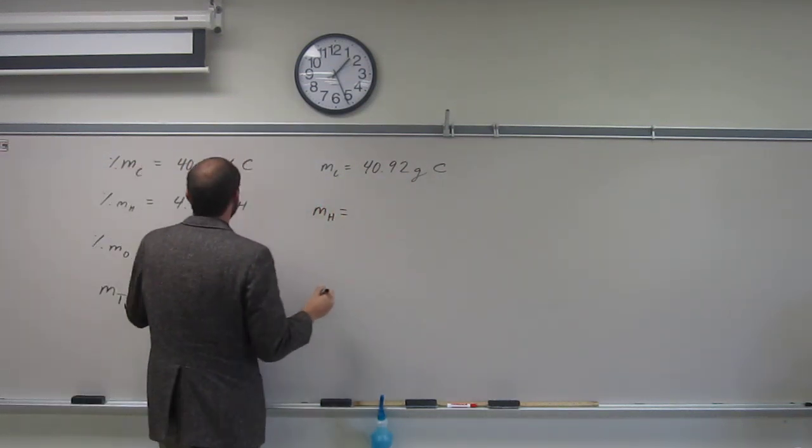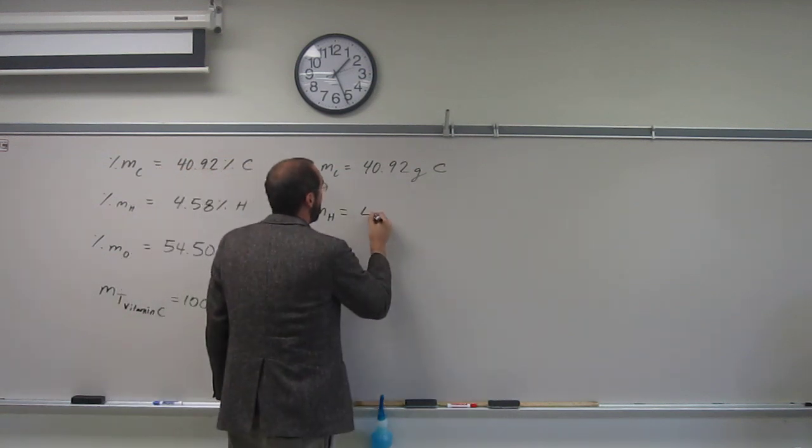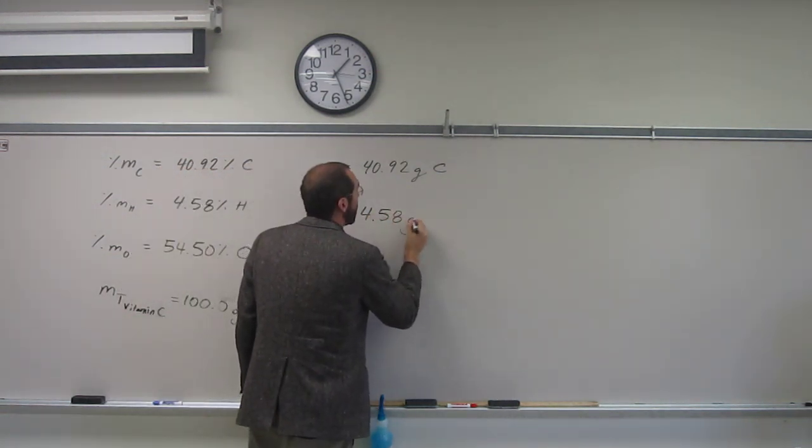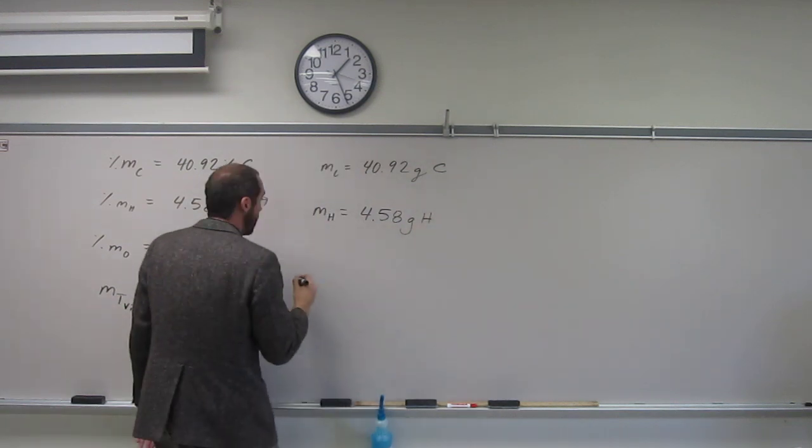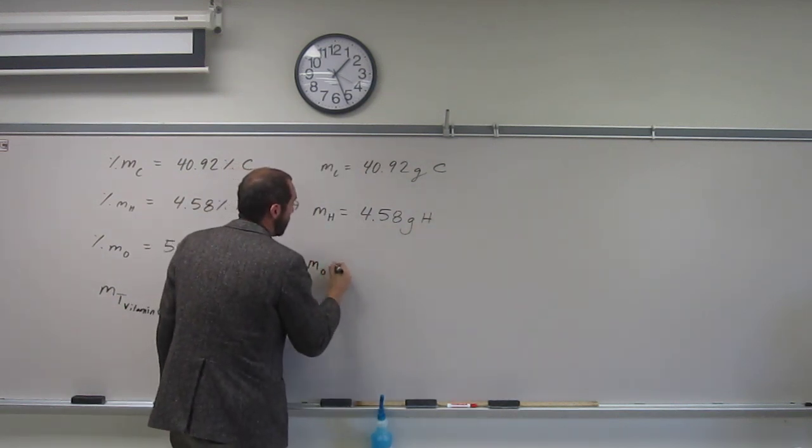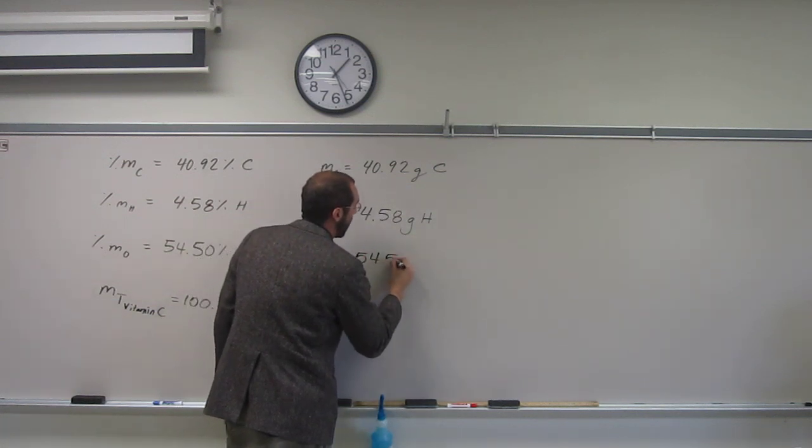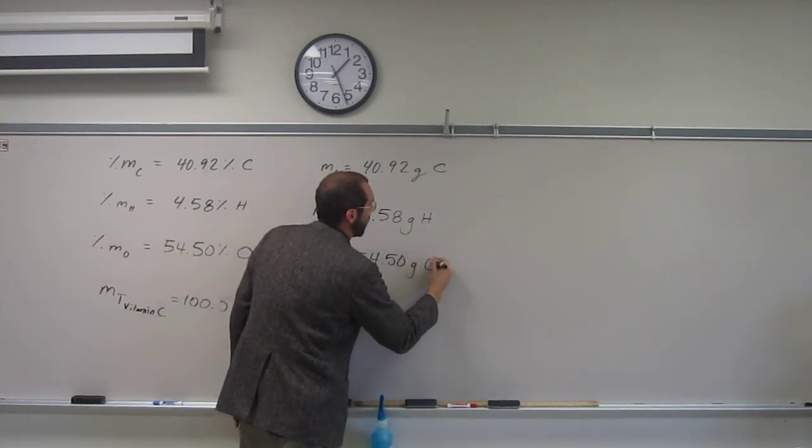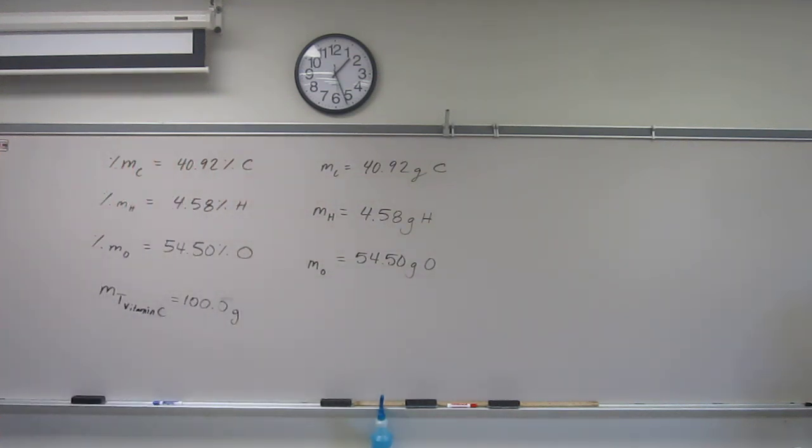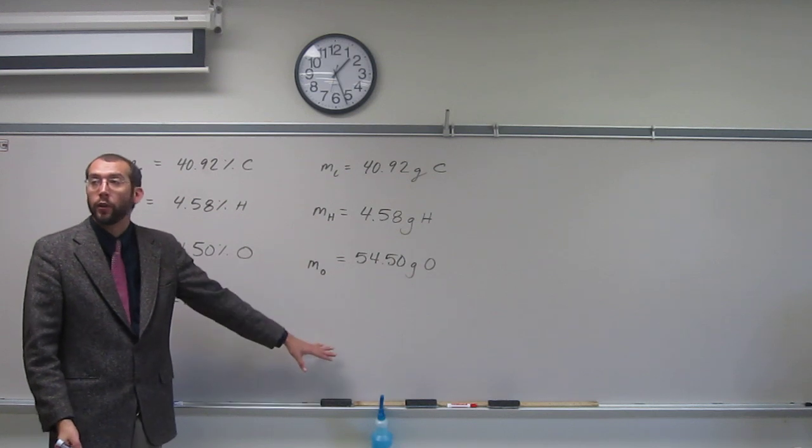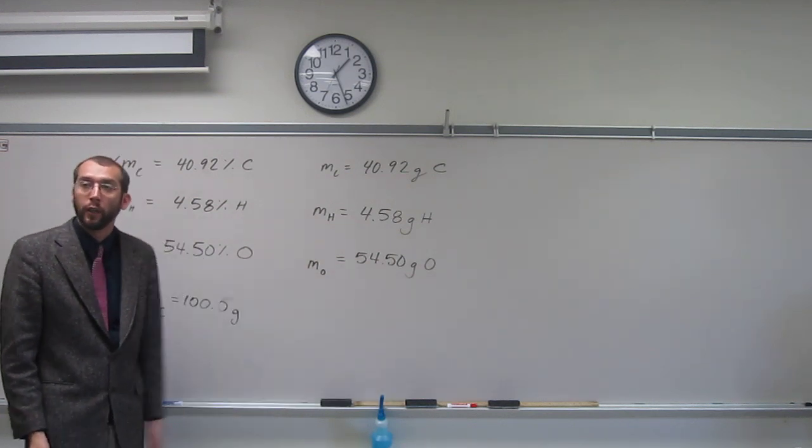I'm just going to do it for the other ones. 4.58 grams of hydrogen, the mass of oxygen is going to be 54.50 grams of oxygen. The total mass then would be 100 grams. If you added all those up, you get them.